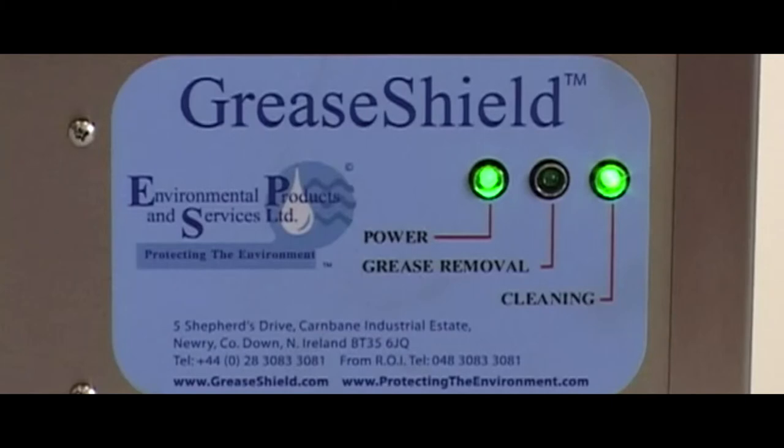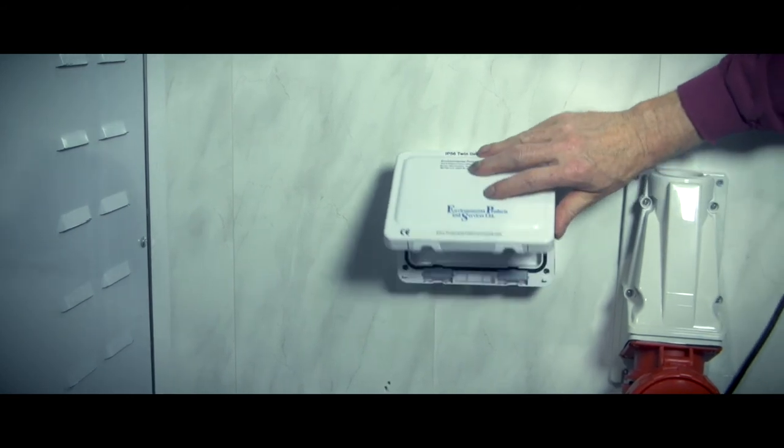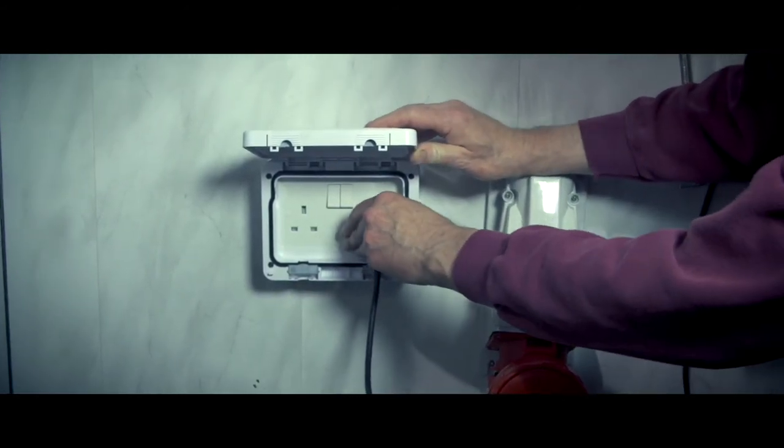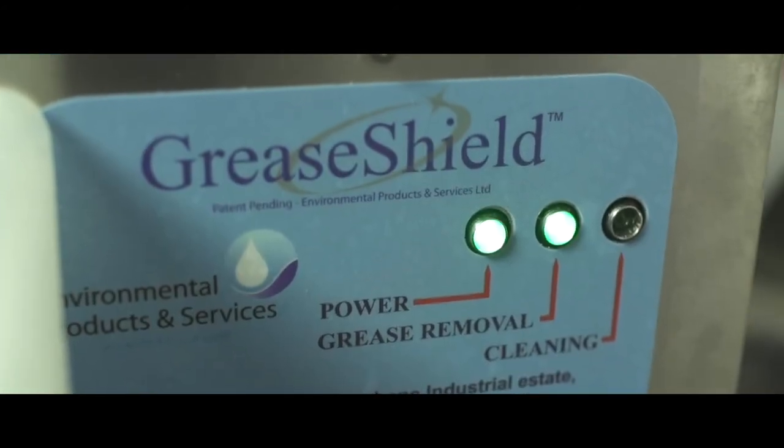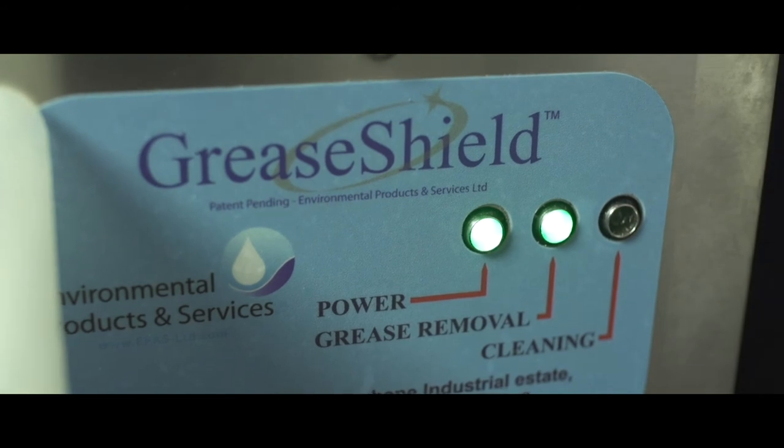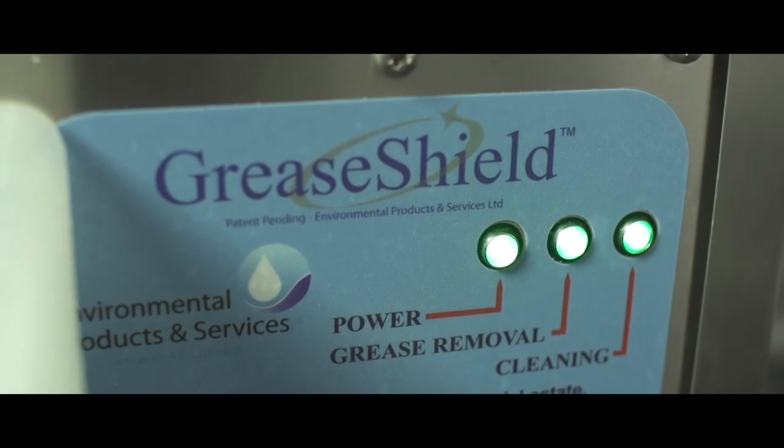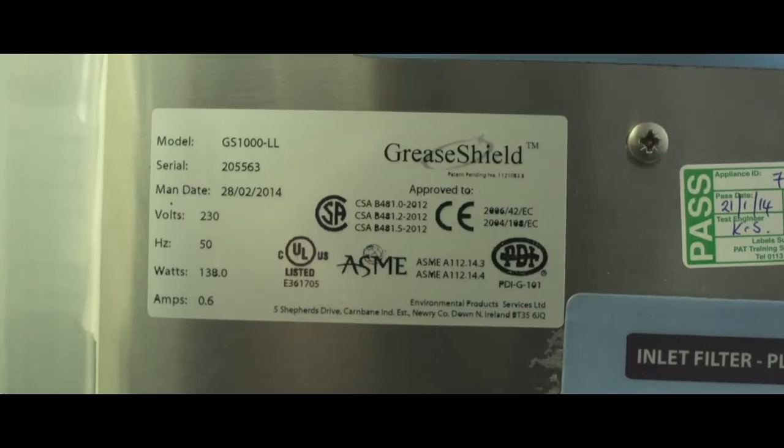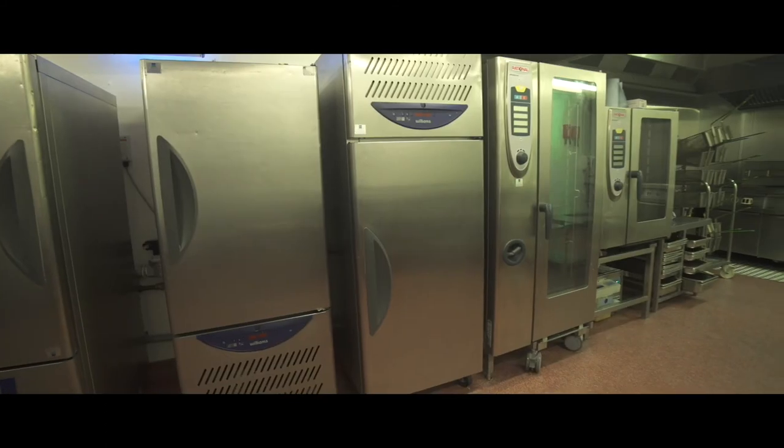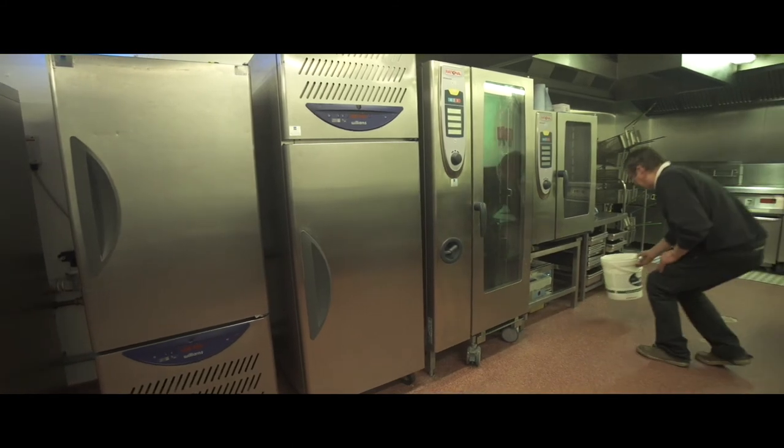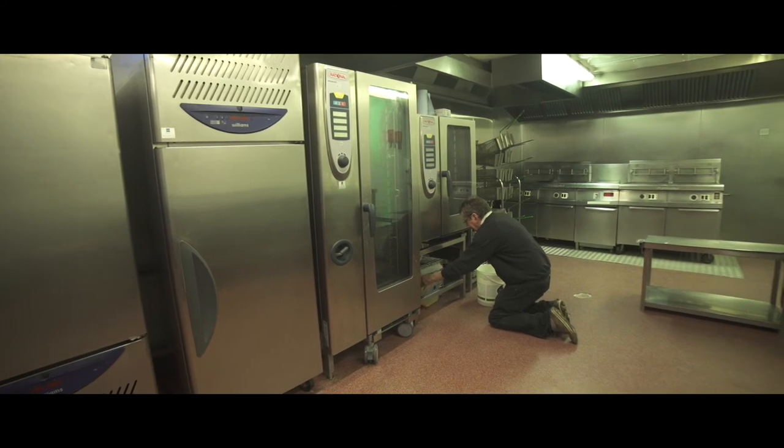LED lights indicate visually mains power to the Grease Shield unit. Unit must be connected to an IP56 outlet power socket located below counter and solely for use for the Grease Shield. FOG removal is indicated by an LED illuminating and the third LED indicates the recirculation function and transfer of FOGs from the low level tank. Grease Shield is extremely economic using as little as 15 watts per hour. Typical consumption for the low level Grease Shields is 22 watts per hour and for the AST range is typically 47 watts per hour.